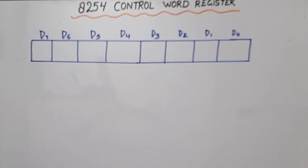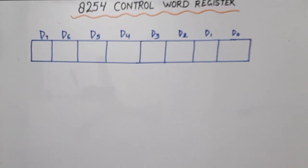Hello everyone. In this video lecture on microprocessors, today I am going to discuss the control word register of IC 8254. IC 8254 is a PIT, which is used for providing accurate time delay and many other functions. PIT stands for Programmable Interval Timer. This control word register is the same for 8254 as well as 8253, with little difference.